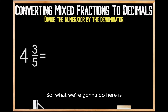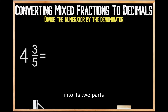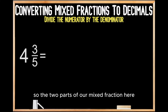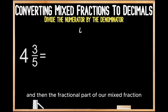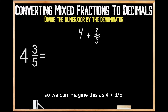What we're going to do here is we're actually going to break apart this mixed fraction into its two parts. So the two parts of our mixed fraction are our whole number of 4 and the fractional part, which is our 3 fifths. So we can imagine this as 4 plus 3 fifths.